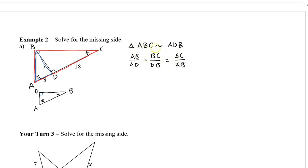So I'm just writing out the proportions based on the letters: AB divided by AD equals BC divided by DB, which equals AC divided by AB. Now we're going to fill this in with our numbers. AB we don't know, AD we know is 8, BC we don't know, DB we have a value there, AC is 8 plus 18 so that's 26, and AB again we don't know. So we have a lot of things that are missing, and we can't find X yet because X isn't part of a fraction where we have the value for BC.